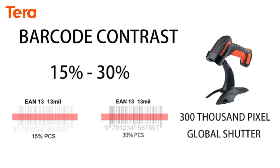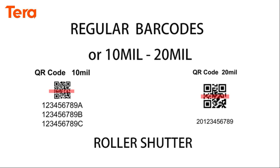If your barcode contrast is greater than 15% and less than 30%, choosing at least a 300,000-pixel global shutter barcode scanner is recommended. For regular barcodes with 10 mil or 20 mil, a roller shutter barcode scanner will work fine for you and can also save cost.